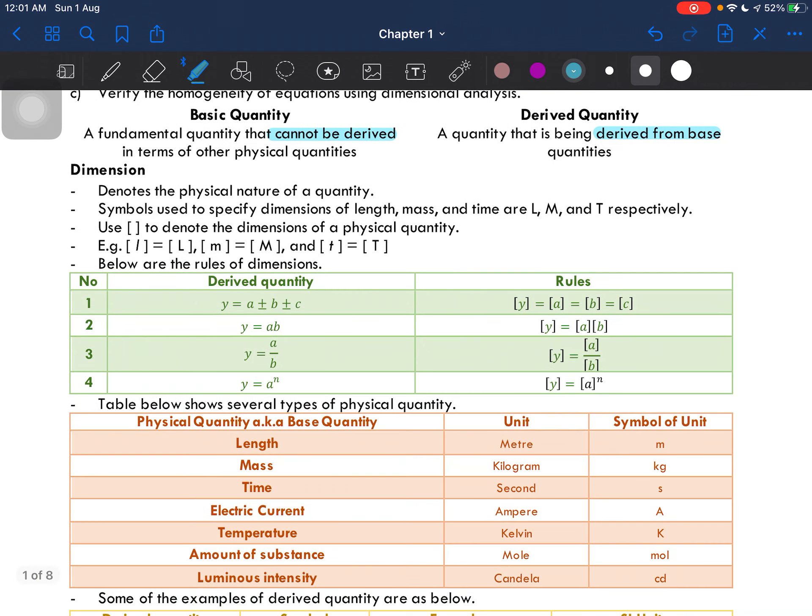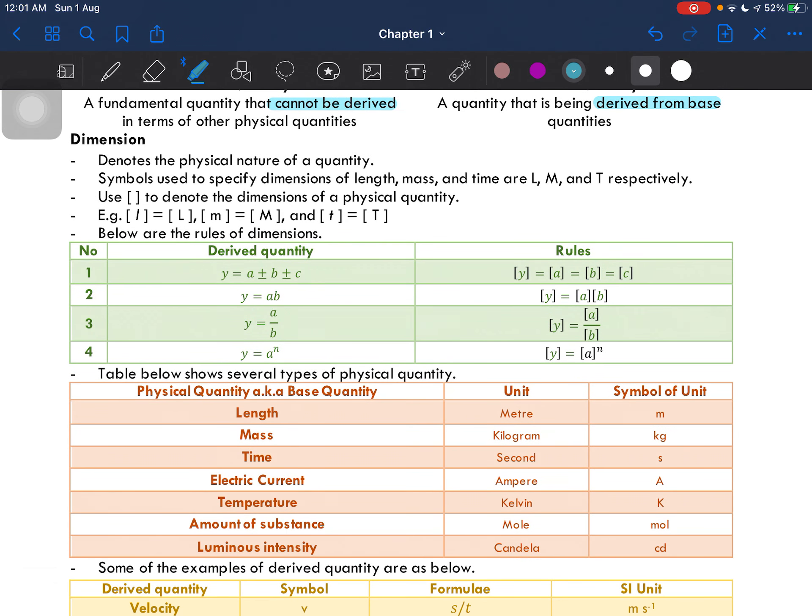So let's go into dimension. What is dimension actually? Well, dimension is something that denotes the physical nature of a quantity. Some of the symbols we use are capital L for length, capital M for mass, and capital T for time.